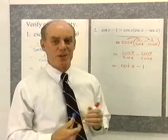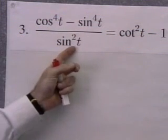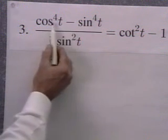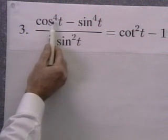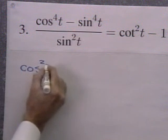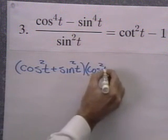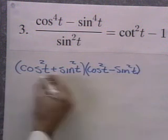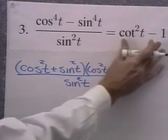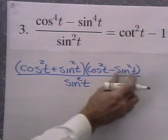Let's look at another one. This one involves a little bit of factoring from algebra. Number 3: cosine to the fourth minus sine to the fourth, all divided by sine squared, equals cotangent squared t minus 1. I'm going to factor the difference of two squares, noticing that cosine to the fourth is cosine squared quantity squared, and sine to the fourth is sine squared quantity squared. So I rewrite the numerator as the quantity cosine squared t plus sine squared t, times the quantity cosine squared t minus sine squared t, all over sine squared t.